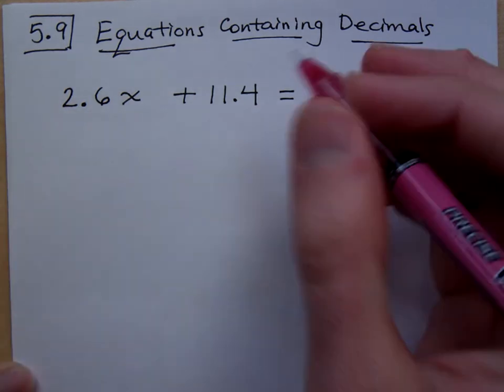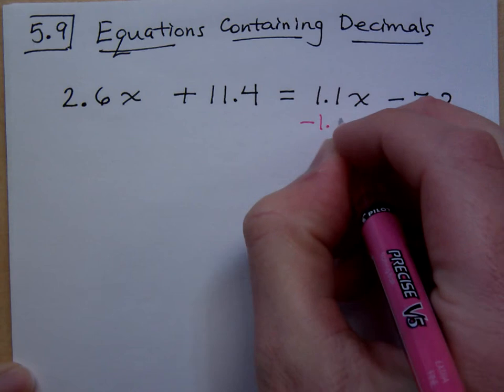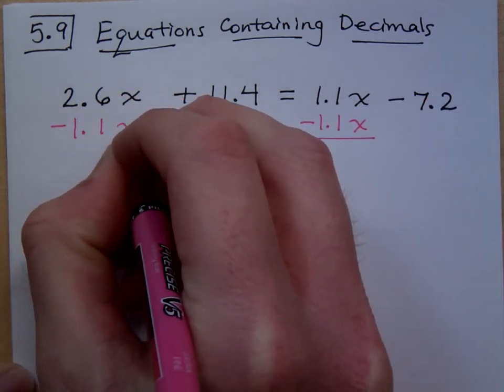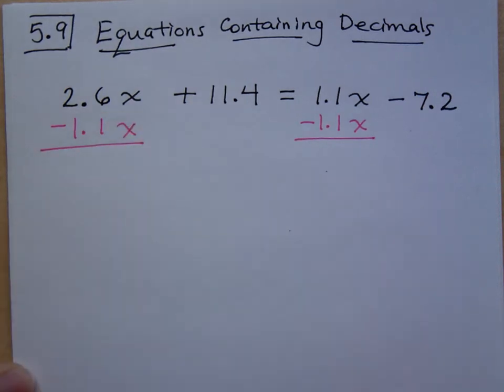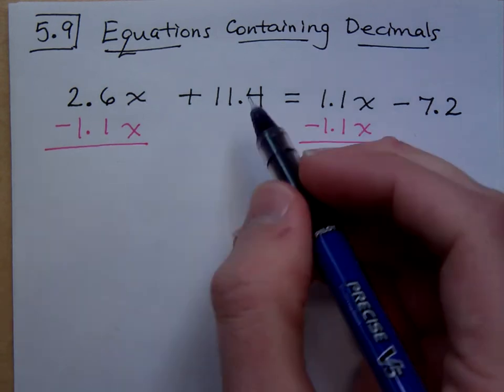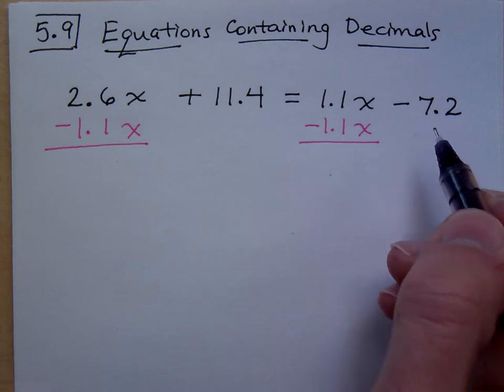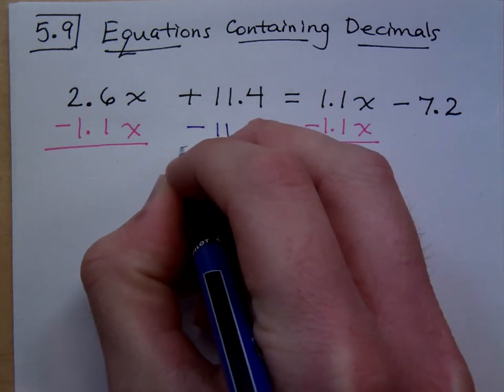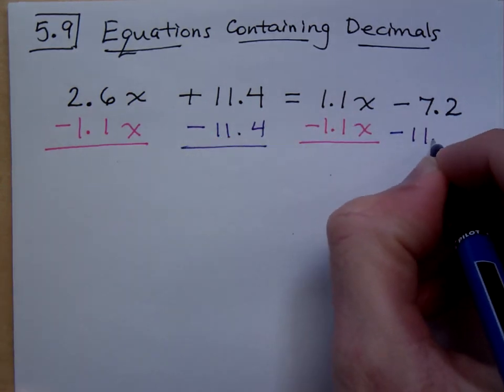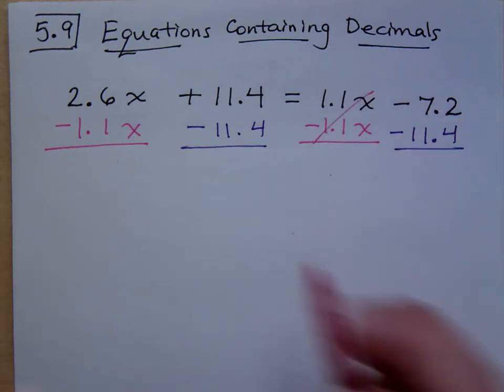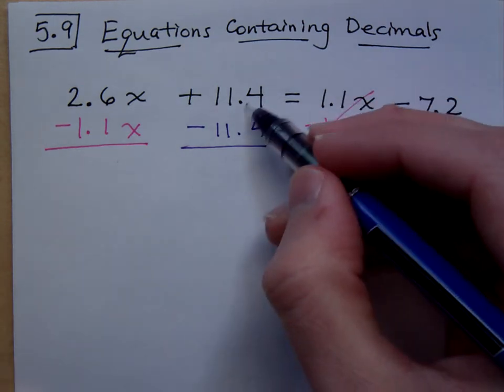If I subtract it then I think the work that's going to be left here is going to be a little bit easier for me to handle. While I'm doing that I should also move my constants to the other side. Don't put everything on the same side, it won't work for you. So subtract 11.4 from both sides.